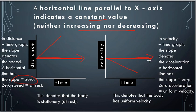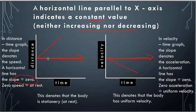A horizontal line means slope is zero. In a distance-time graph, slope means distance by time, which is speed. So slope zero means speed is zero — the body is not moving at all. In a velocity-time graph, slope means velocity by time, which is acceleration. So slope zero means acceleration is zero — the velocity is constant. A horizontal line in a distance-time graph means the body is at rest, while in a velocity-time graph it means constant velocity.